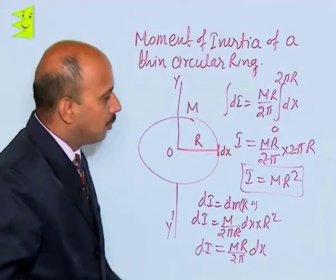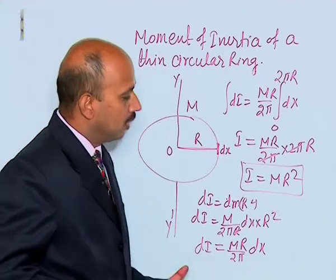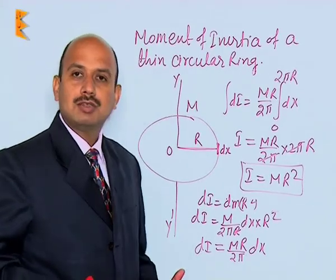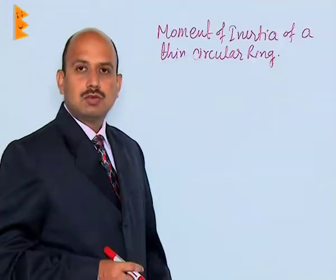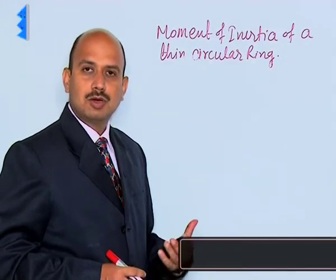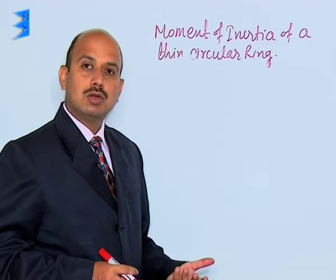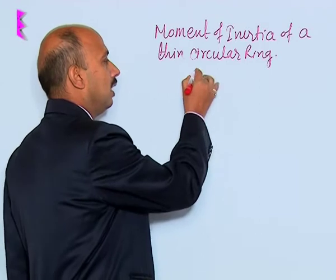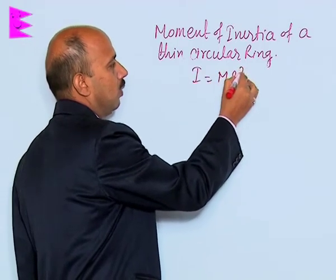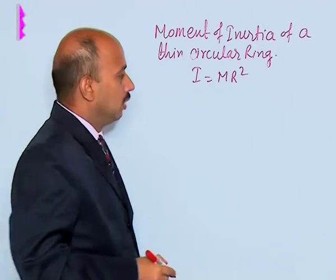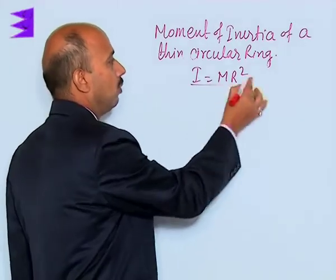So, if the body does not consist of discrete particles, then we can calculate moment of inertia by using integration or the summation process. We have calculated the moment of inertia of the ring about an axis passing through the center and perpendicular to the plane of the ring, and that moment of inertia is I = mr².